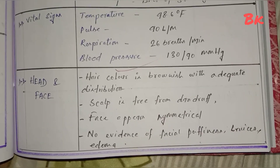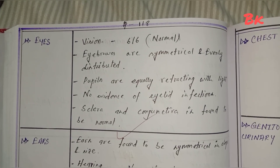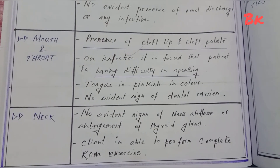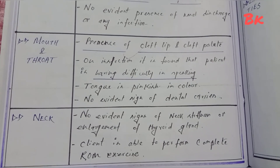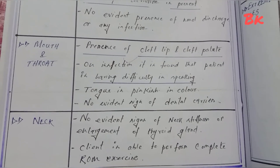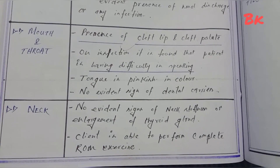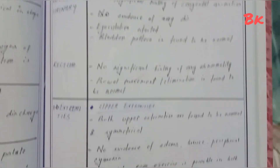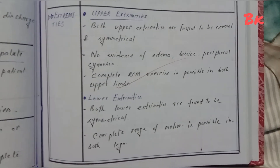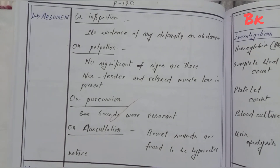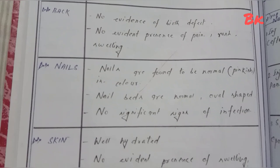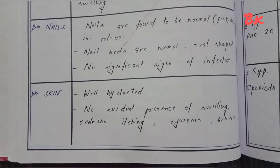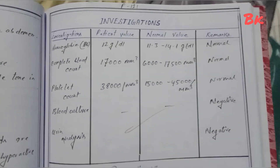Vital signs: temperature, pulse, respiration, blood pressure. Head and face, eyes, ears examined. Mouth and throat: presence of cleft lip and cleft palate is noted, with difficulty in speaking. Neck, chest, genitourinary, rectum, and extremities examined. Abdomen, back, nails, and skin also examined.